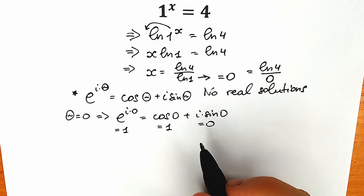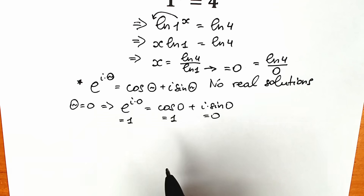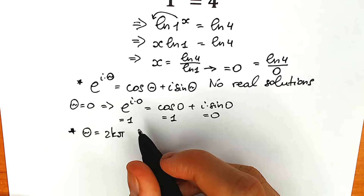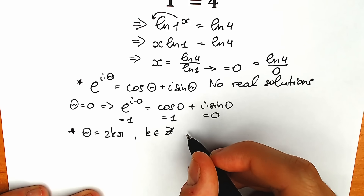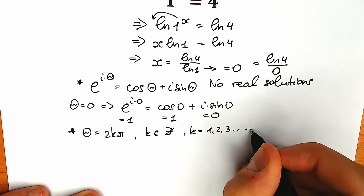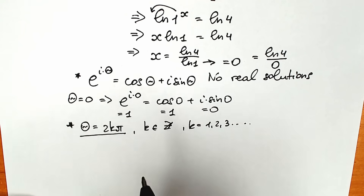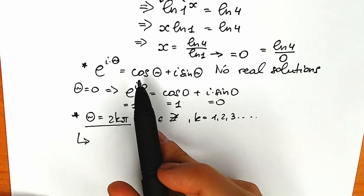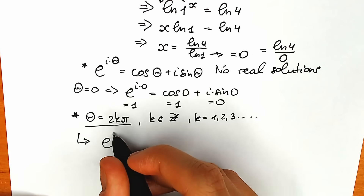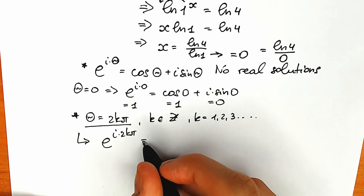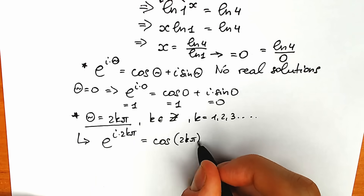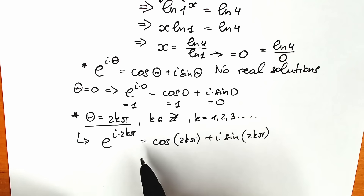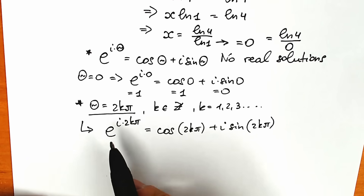Now I'm going to show you a great way to find complex roots for our question. First, we need to use a substitution: theta equals 2kπ, where k is an integer — k equals 1, 2, 3, and so on. With this substitution, our Euler's identity looks like: e to the power i times 2kπ equals cosine 2kπ plus i times sine 2kπ. This expression is really helpful for finding all possible combinations.